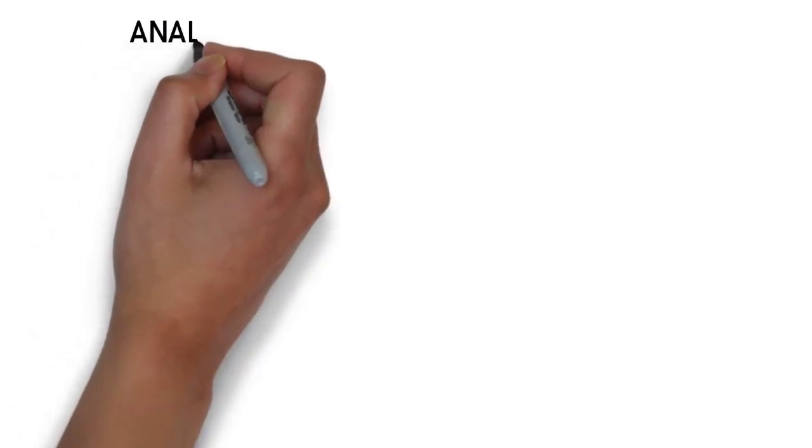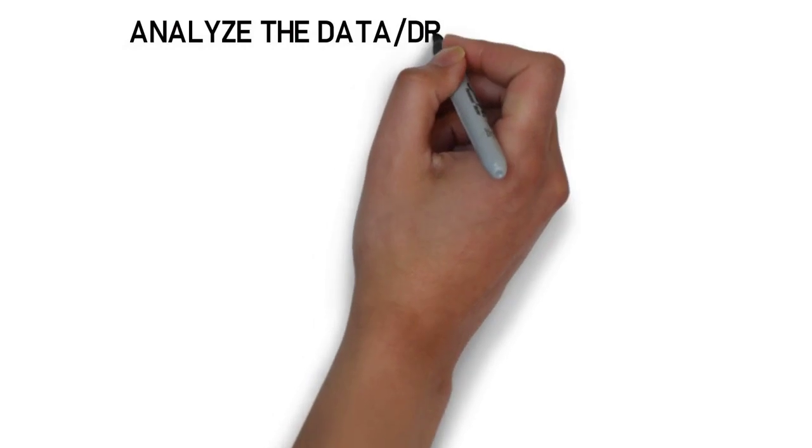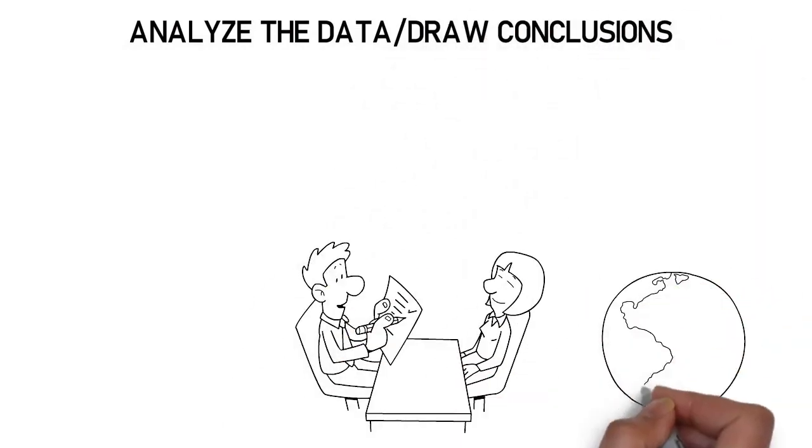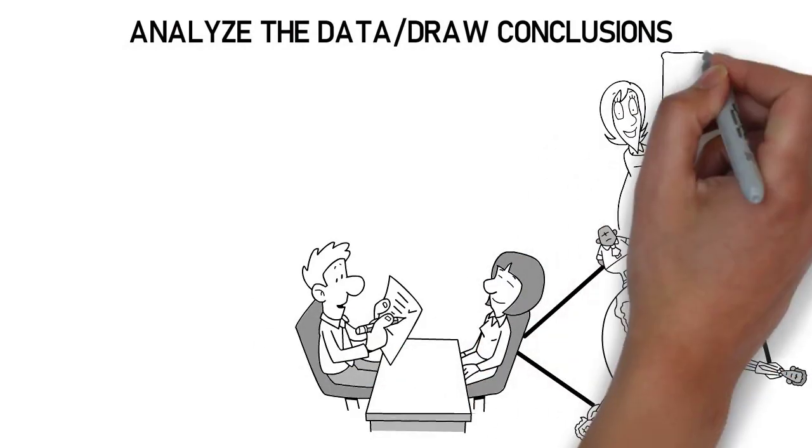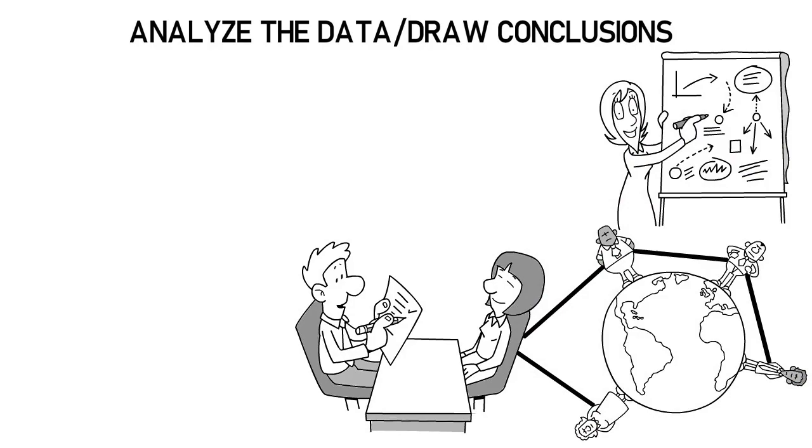After we've conducted our experiment, we usually have generated some data and now we need to analyze it. In science, analyzing the data is often the most tedious part of the process and it often involves statistics or some sort of mathematical approach. However, there are software tools and statisticians available to help with the data analysis process.